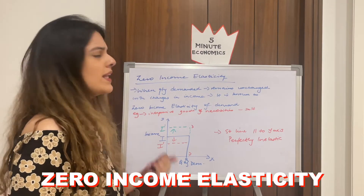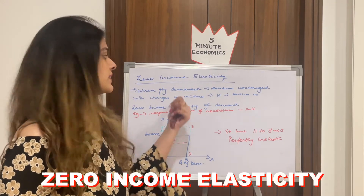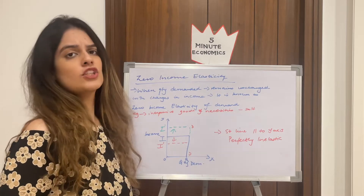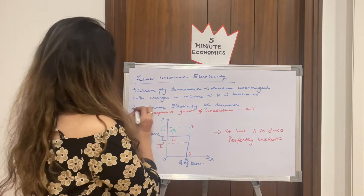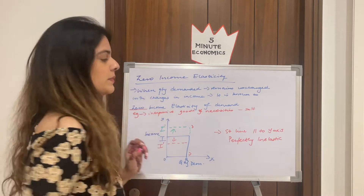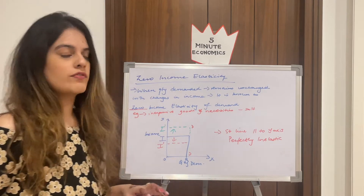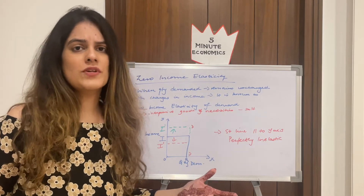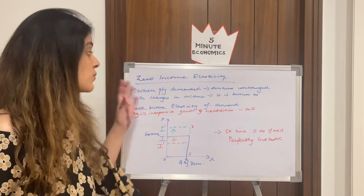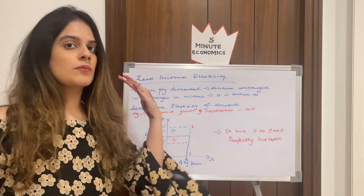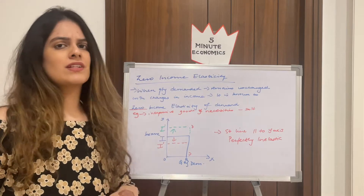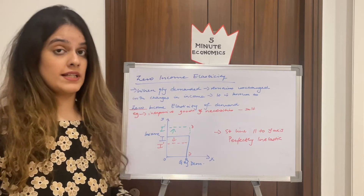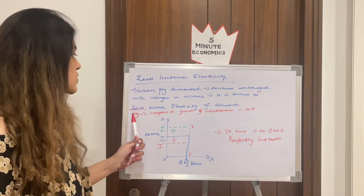Moving to zero income elasticity: when quantity demanded remains unchanged with changes in income, it is known as zero income elasticity of demand. Zero means no effect — even if income rises or falls, there is no change in quantity demanded.